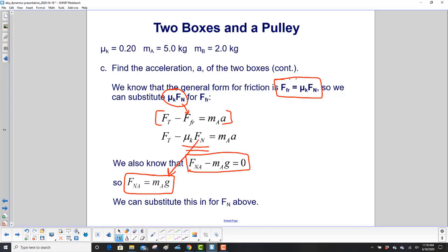So that tells us that the normal force on box A is M sub A times G. So do you see what we're going to do next? Yep, we can probably get rid of the normal force here next.